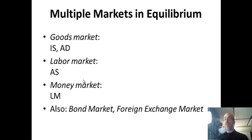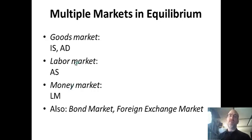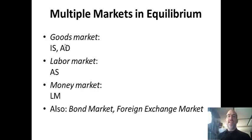The models we're going to use in intermediate macro are the goods market, the labor market, and the money market simultaneously. It's important to note that a change in one market leads to spillovers in the others. For example, an increase in spending on goods might mean more workers are required or more money is needed to buy those goods. So one change in one market will actually lead to shifts in the others — shifting one curve will be shown across a number of graphs on one page, simultaneously determining the main variables Y, P, and R.